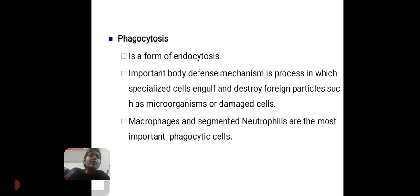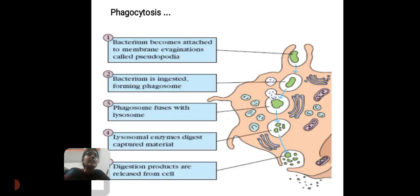Next, phagocytosis — it is a form of endocytosis and an important body defense mechanism. It is a process in which specialized cells engulf and destroy foreign particles such as microorganisms or damaged cells. Macrophages and segmented neutrophils are the most important phagocytic cells. There are five steps: first, the bacterium becomes attached to a membrane invagination called a pseudopodium; second, the bacterium is engulfed by the phagocyte; third, the phagosome fuses with lysosomes; fourth, lysosomal enzymes digest the captured material; fifth, digestion products are released from the cell.